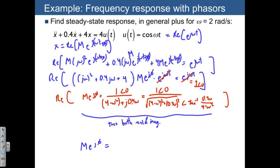And write m e to the j phi is equal to 1 over square root of 4 minus omega squared squared plus 0.4 omega squared at an angle of minus arctangent 0.4 omega divided by 4 minus omega squared.